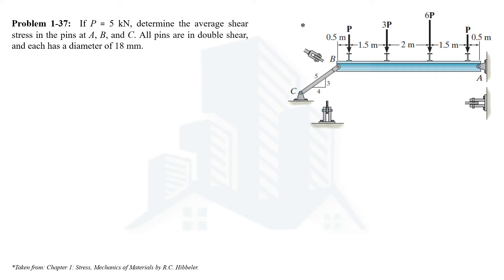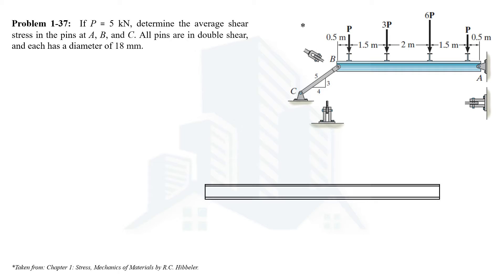In order to solve this example, first we need to know the support reactions at different points. To find the support reactions, we should draw the free body diagram. Let's consider beam AB first and determine the reactions on the beam. So let's draw our free body diagram — this is the beam, this is point B, and this is point A.